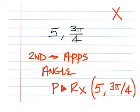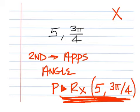Type in 5 comma 3 and the pi button — the caret — you have to hit Second, caret to get pi, and then divide it by 4, and then a right-hand parenthesis. This is what you're entering into the calculator. Rounding your answer to the nearest tenth, X would equal 5.0.